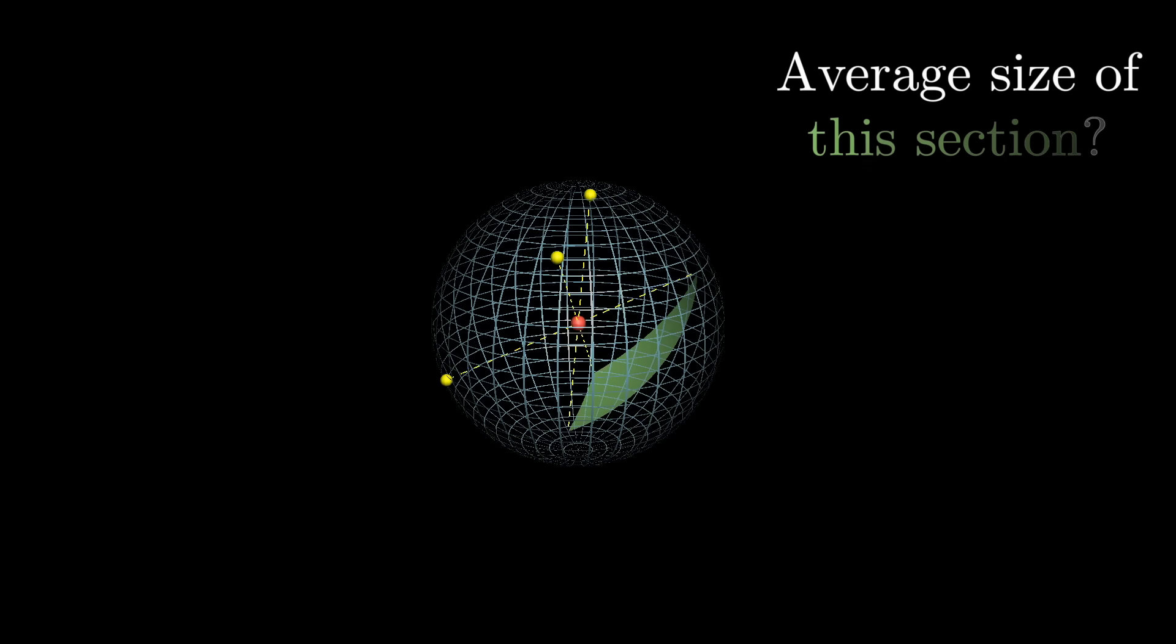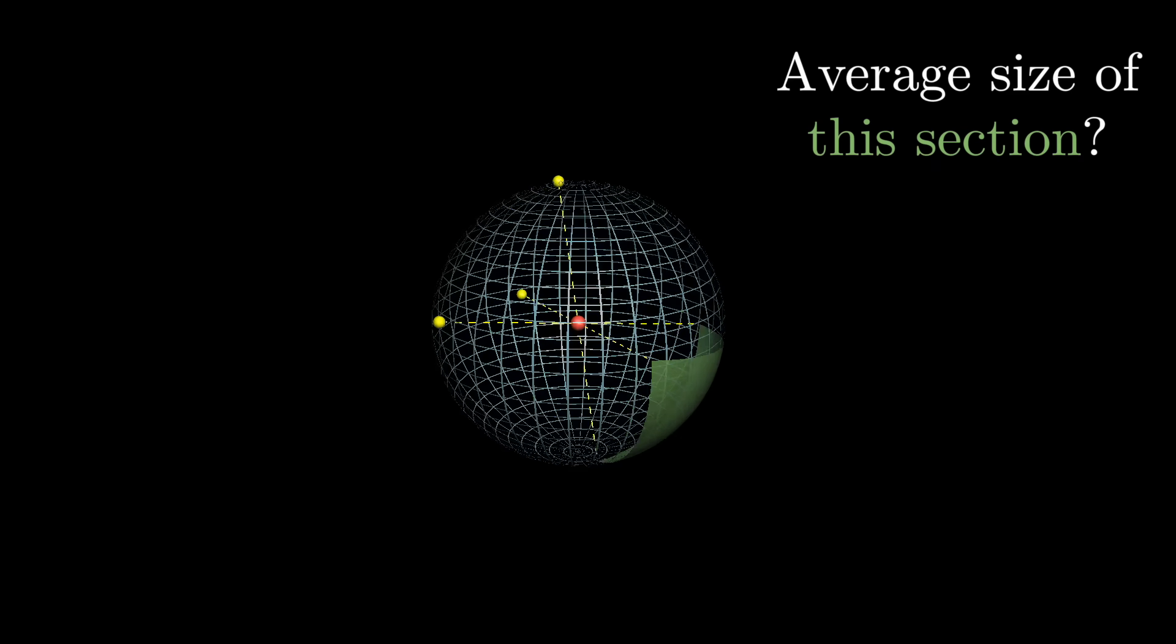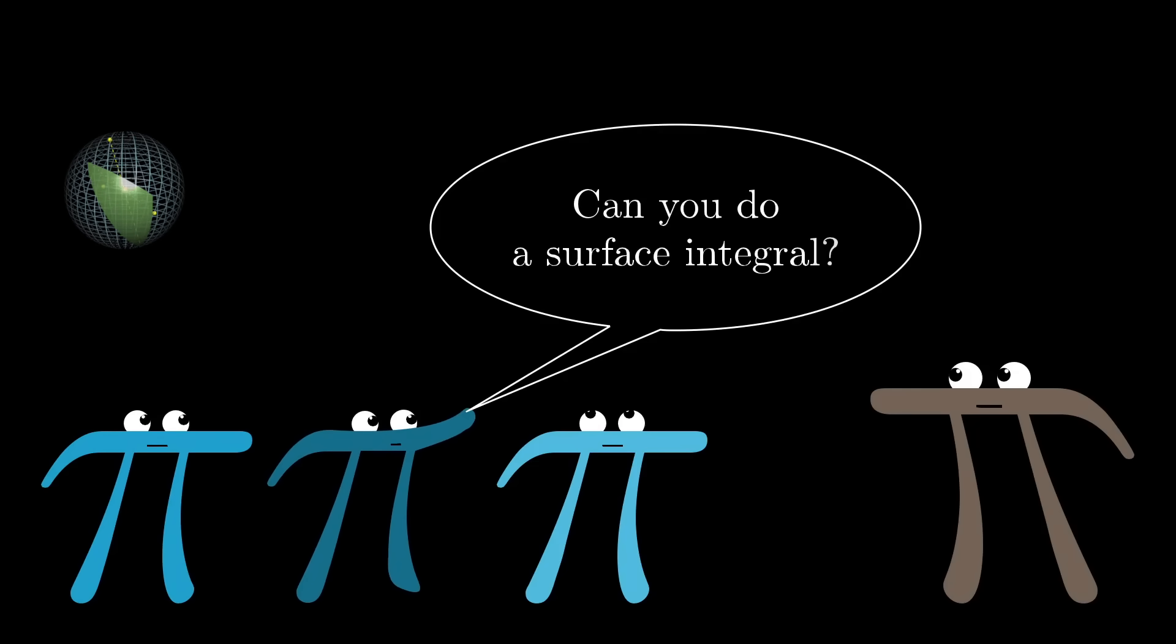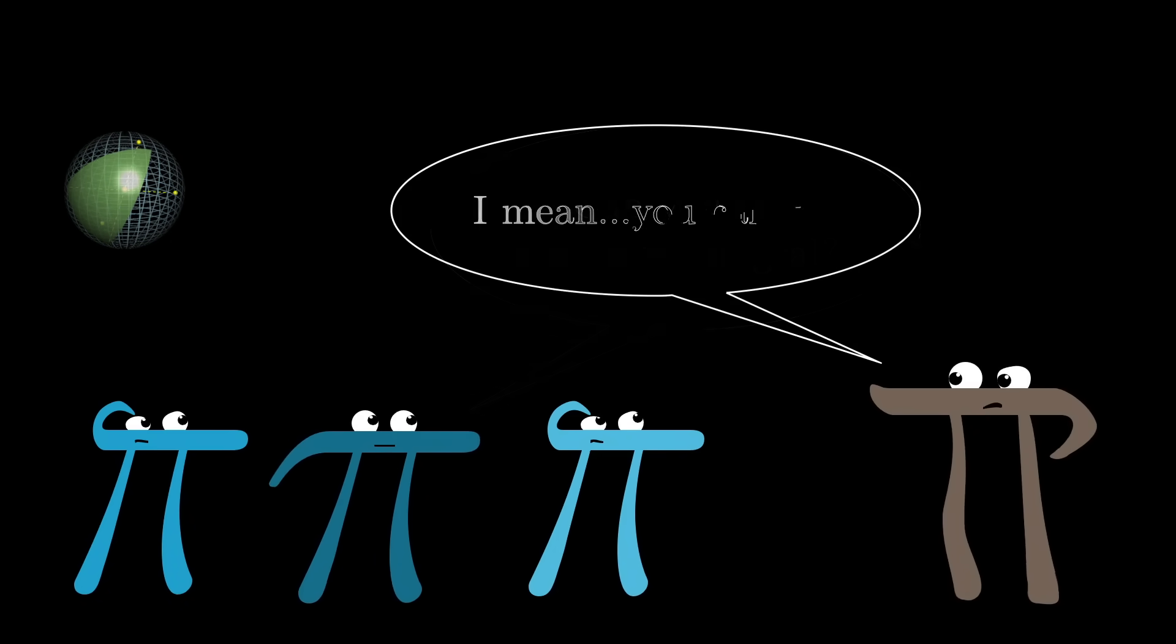Now unlike the 2D case, it's pretty difficult to think about the average size of this section, as we let the initial three points vary. Those of you with some multivariable calculus under your belt might think, let's just try a surface integral. And by all means, pull out some paper and give it a try. But it's not easy. And of course it should be difficult. I mean, this is the sixth problem on a Putnam. What do you expect?